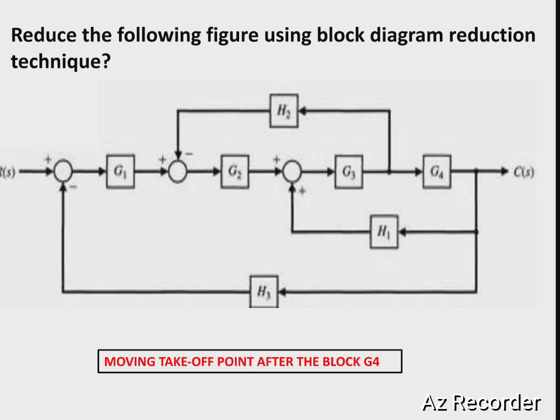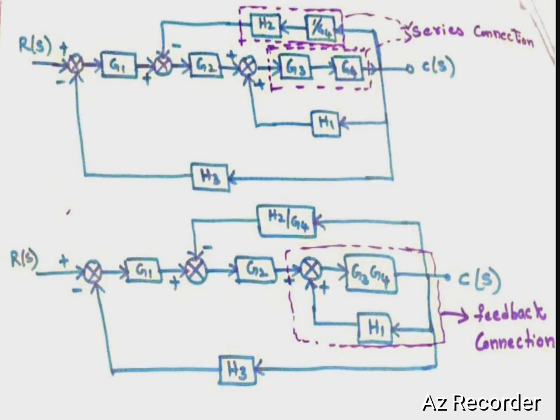Here I am moving the takeoff point from before G4 to after the block G4. To do this, we have to add one more block in the takeoff branch, that is 1/G4. Now H2 is in series with the 1/G4 block because of this movement of the takeoff point.